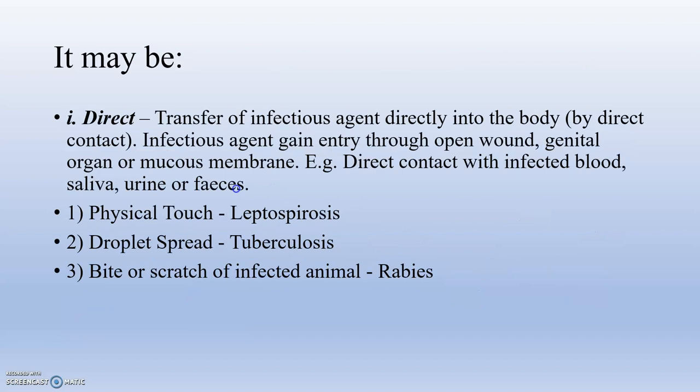Horizontal transmission may be direct — that is, transfer of infection directly into the body by direct contact with infected blood, through open wounds, genital organs, urine, saliva, or feces. Examples include leptospirosis via physical contact, tuberculosis via droplet spread, and rabies via bite or scratch of an infected animal.